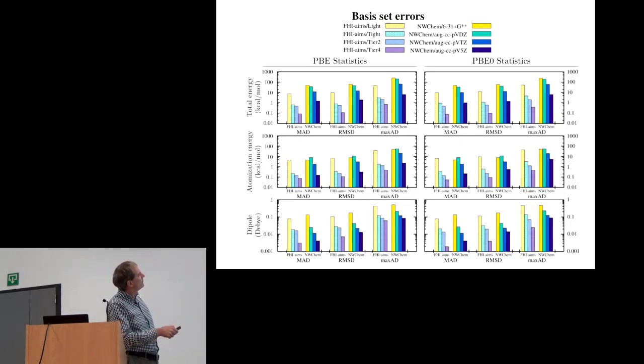If you go to larger basis sets it gets better, but if you really want to be on average clearly below this 1 kcal per mole, you have to use the largest possible Gaussian basis set, which is actually very rarely used in practice. Even for this case you can have outliers that are still above your target precision.